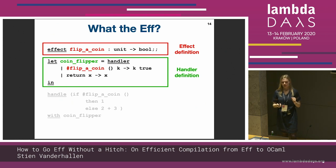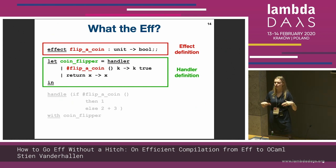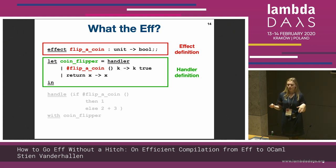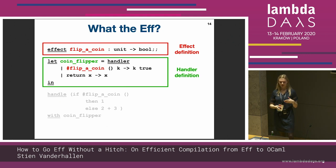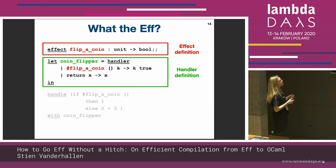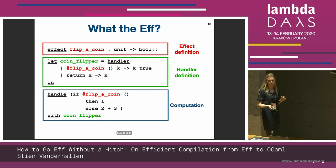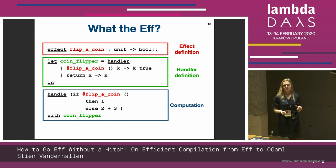Then we define a handler which is an actual coin flipper, and we arbitrarily choose to flip the coin to true — feeding true through to the computation which throws the effect of flipping a coin.